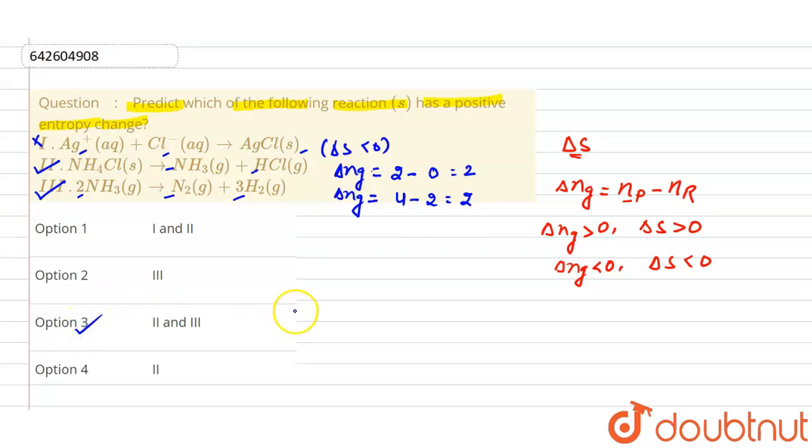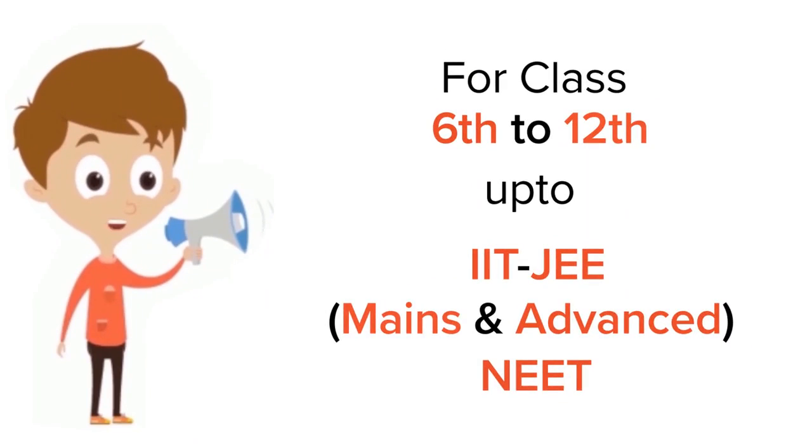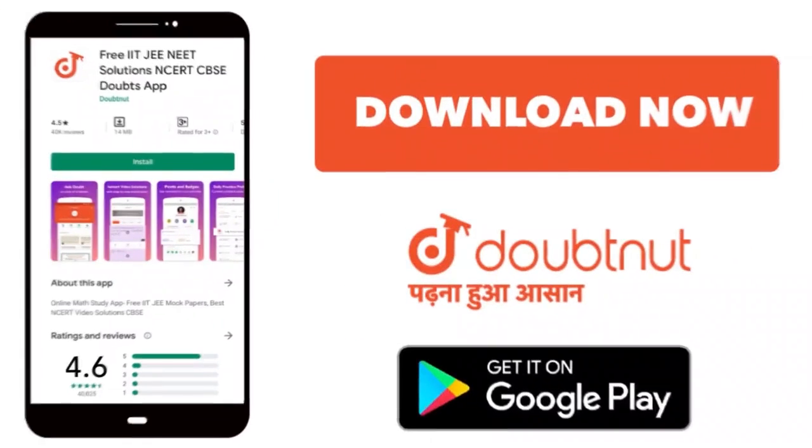second and third. So I hope you understand this concept. Thank you. For class 6-12, IIT-JEE and NEET level, trusted by more than five crore students, download Doubtnut app today.